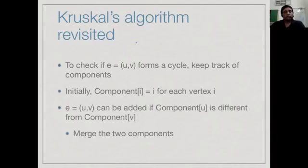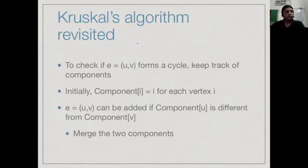We must decide how to keep track of whether adding an edge forms a cycle. The easiest way is to keep track of the components. If the edge is incident on two different components — one endpoint in one component and the other in a different component — then inductively each component is a tree, so the two trees are disjoint and the new edge does not form a cycle. If both endpoints are in the same component, it will form a cycle. So tracking whether a new edge forms a cycle is equivalent to tracking components.